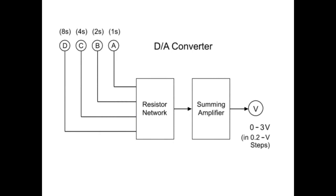This block diagram shows a digital-to-analog converter with four digital inputs that pass through a resistor network. A summing amplifier alters the voltage output that can vary from 0 to 3 volts at increments of 0.2 volts.